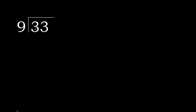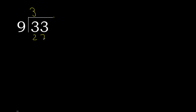33 divided by 9. 3 is less, therefore next, 33 is not less, therefore with 33. 9 multiplied by which number is nearest to 33 but not greater? 9 multiplied by 4 is 36, which is greater. 9 multiplied by 3 is 27. 33 minus 27 is 6.